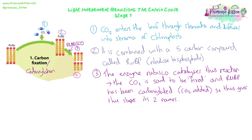Because we've combined a five-carbon molecule with a single-carbon molecule in carbon dioxide, we make, in theory, a six-carbon compound. But this six-carbon compound is so unstable that it basically breaks up immediately. It forms two three-carbon molecules called GP, or glycerate 3-phosphate - you can shorten it to GP or even G3P.